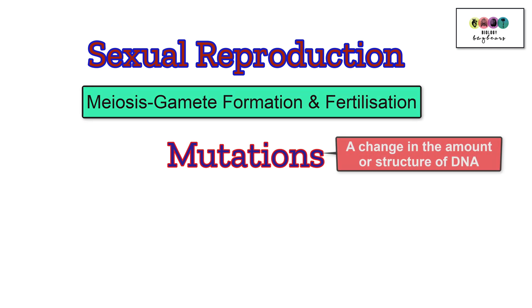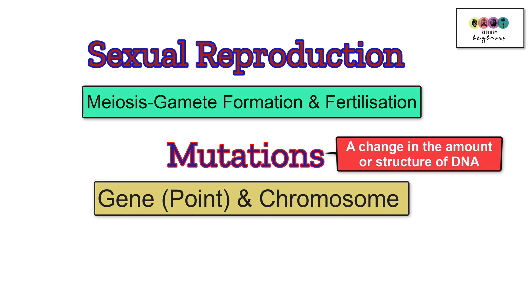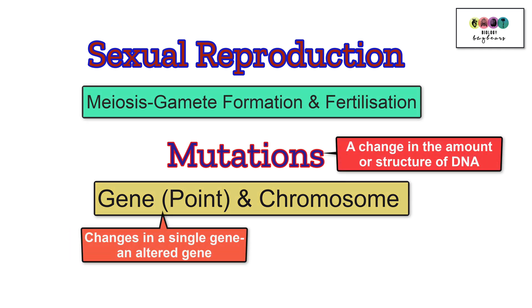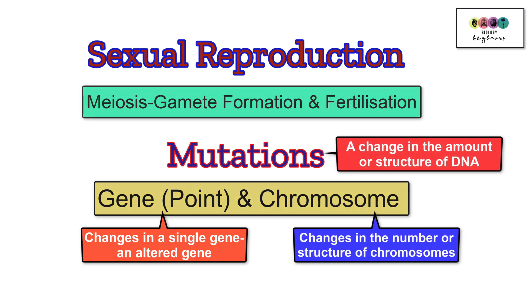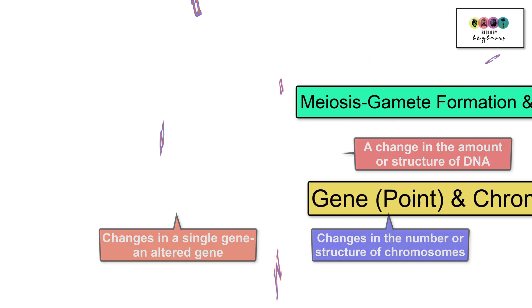Mutations are a change in the amount or structure of DNA, and there are two types. There are gene mutations, otherwise referred to as point mutations, and then there are chromosome mutations. A gene or point mutation is a change or alteration in a single gene — an altered gene. A chromosome mutation is a change in the number or structure of chromosomes.